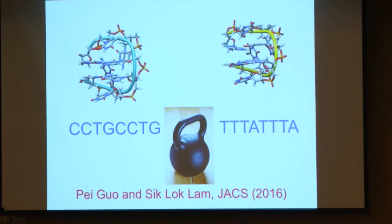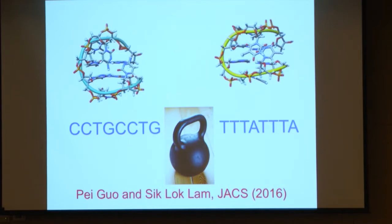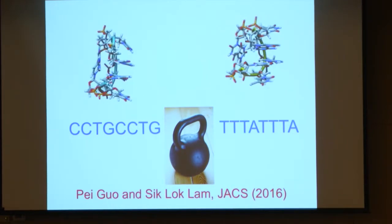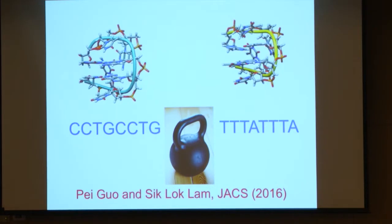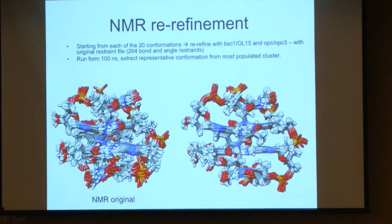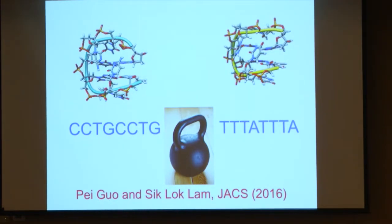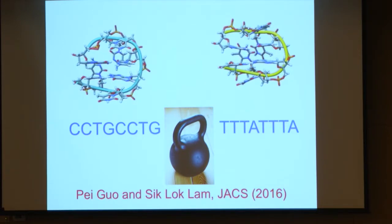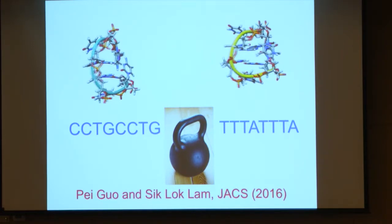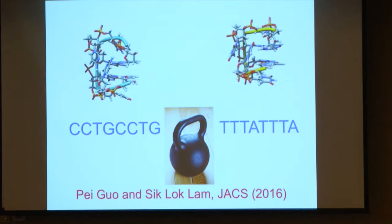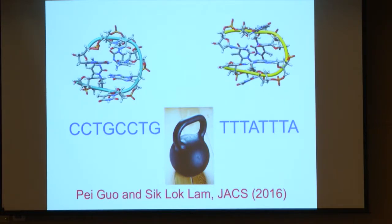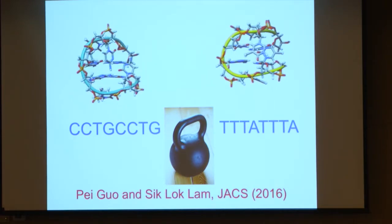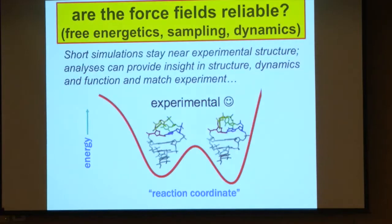More recently we've been looking at NMR-determined mini dumbbell structures. We can reproduce the structures for some limited period of time — the NMR structures were like spaghetti, but if we refine them we get a much tighter set. One concern with a particular CCTG system: the NMR proposed a CC base pair that we don't see in our simulations. We think that's because they solved the structure at low pH and it's probably a protonated system, which we're still investigating.